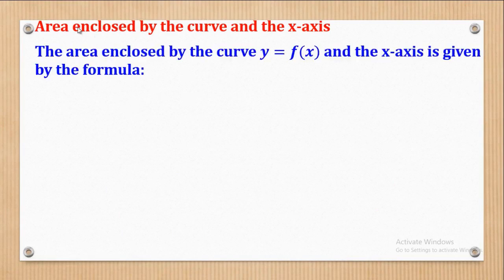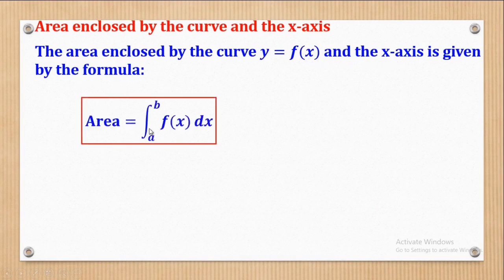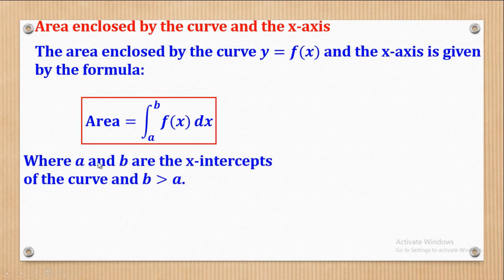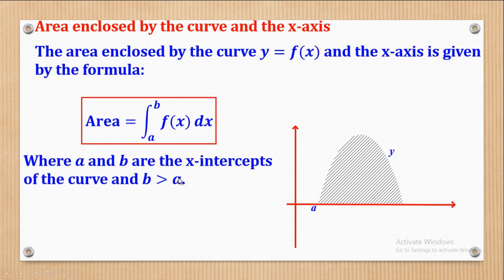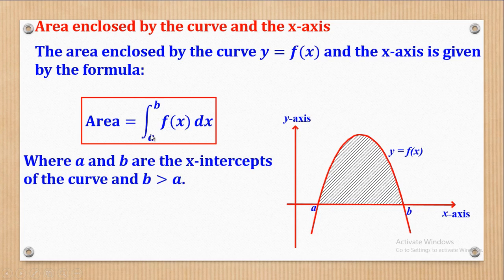The area enclosed by the curve y = f(x) and the x-axis is given by the formula: area equals the integral of f(x) with respect to x from a to b, where f(x) is the curve. And a and b are the intercepts of the curve, whereby b is greater than a, as you can see here below. These a and b are the intercepts of this curve, and b is greater than a, so the upper limit will be greater than the lower limit.